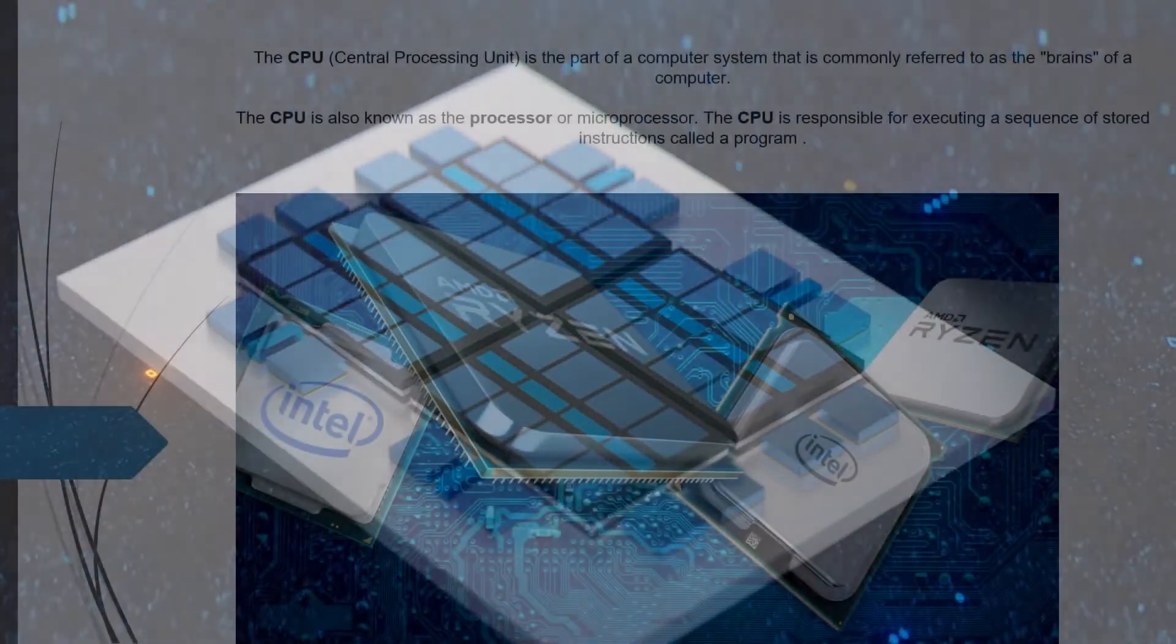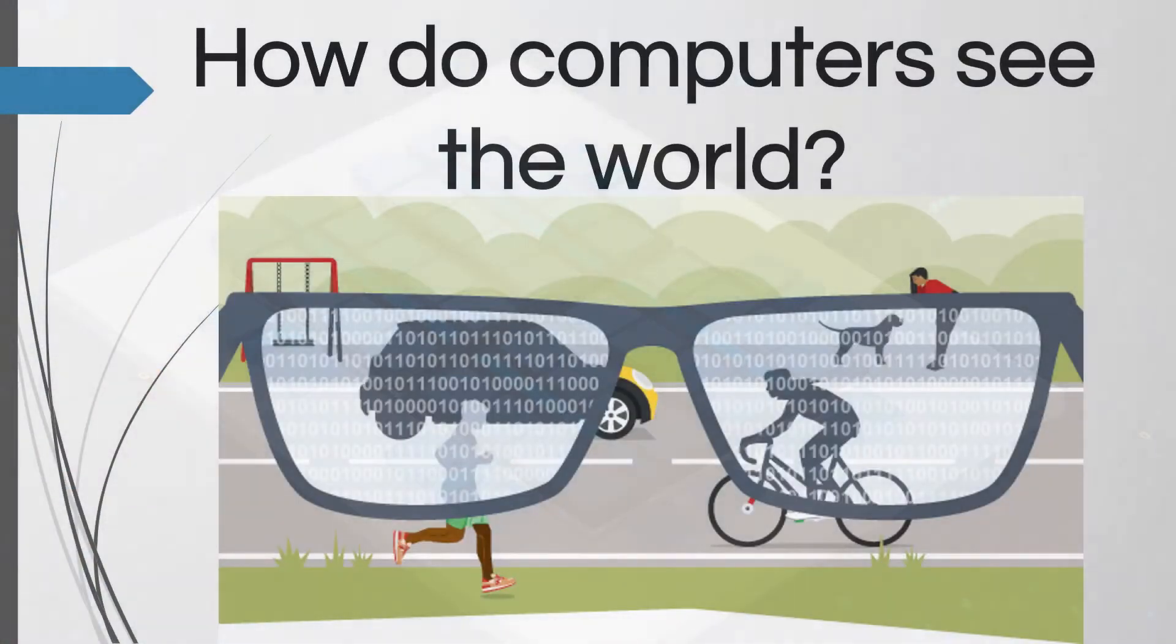How do computers see the world? Well, computers see the world in two states: zero and one. And the CPU is responsible for translating all of those zeros and ones into instructions that we humans can see.